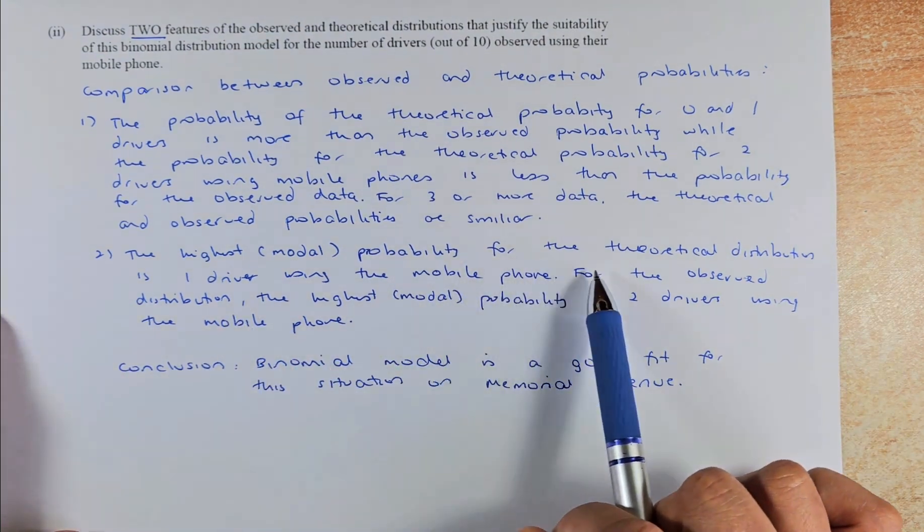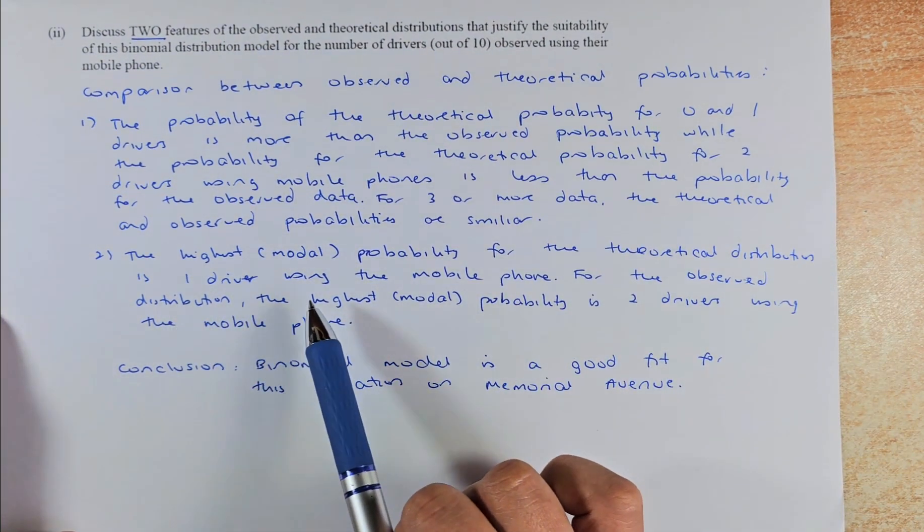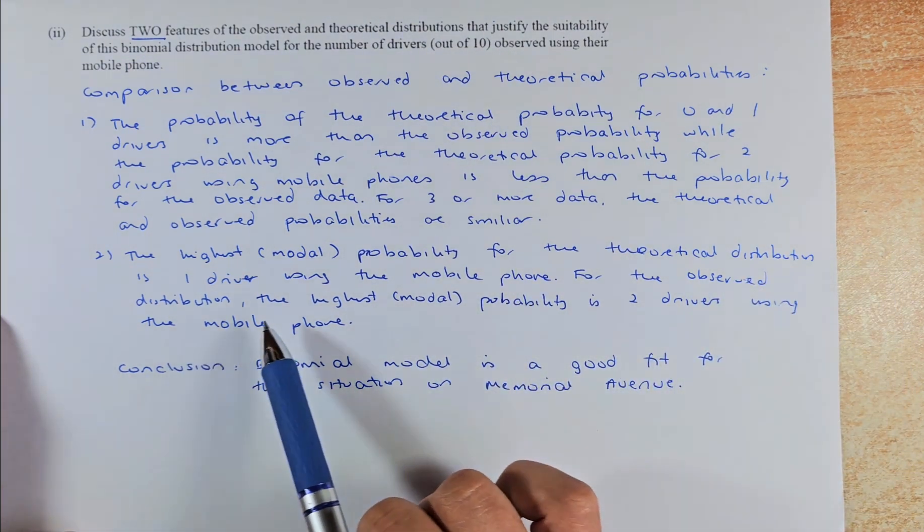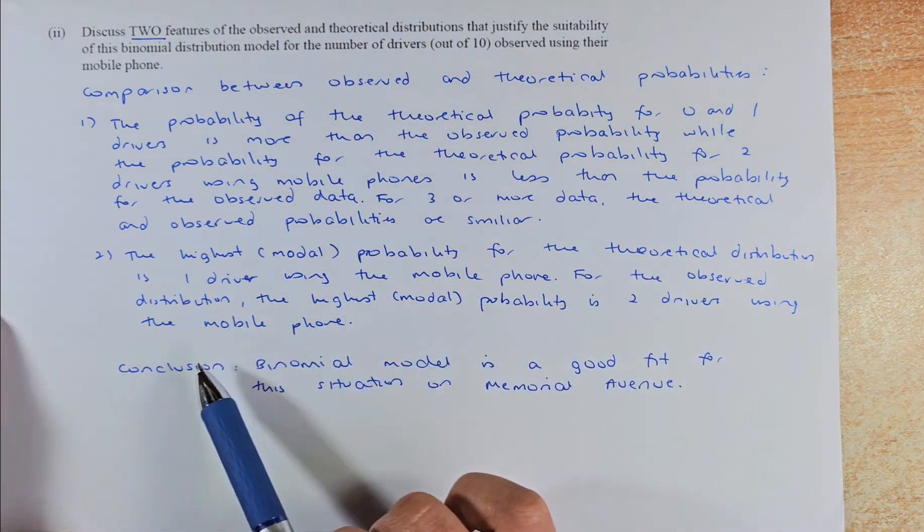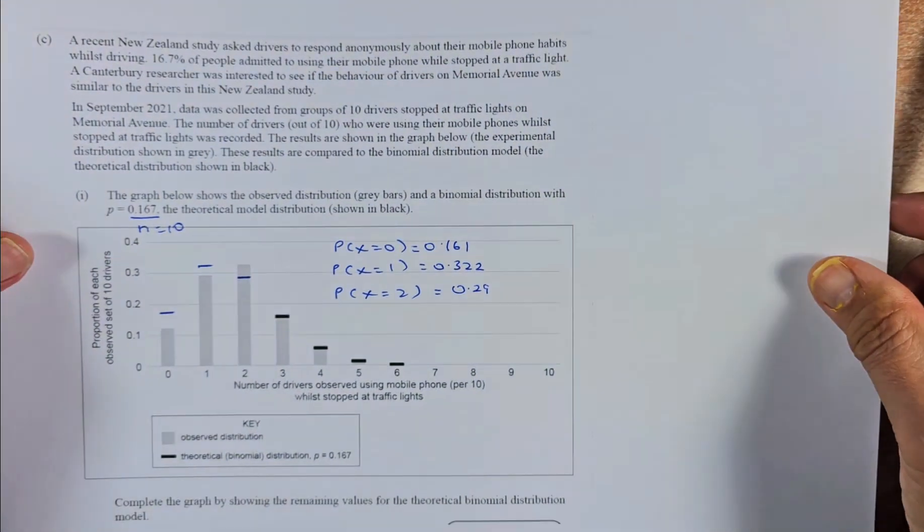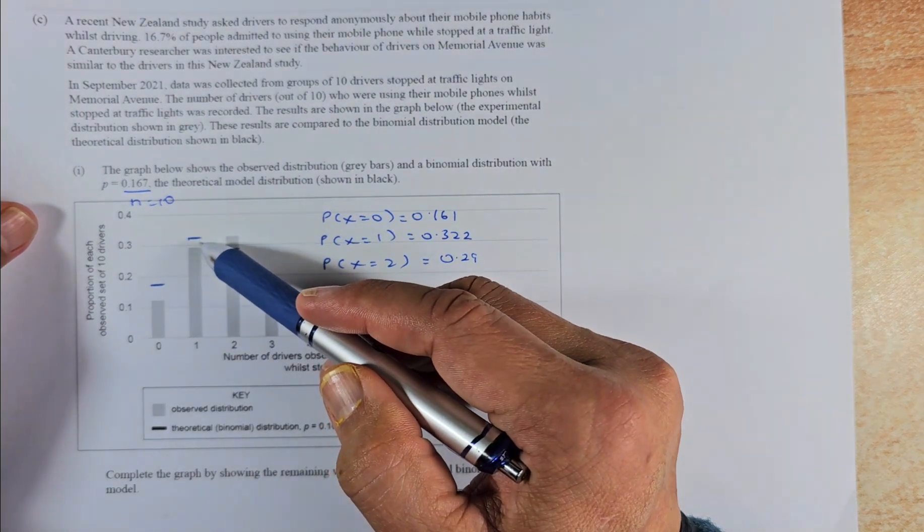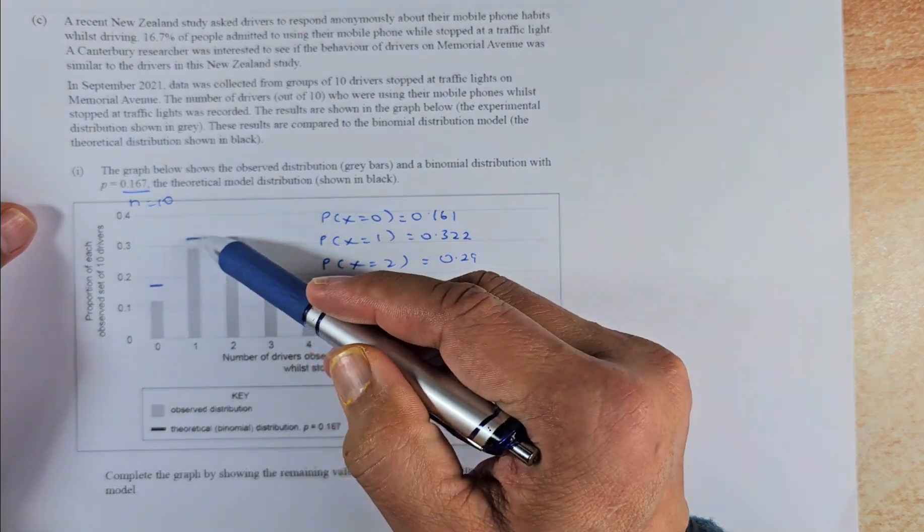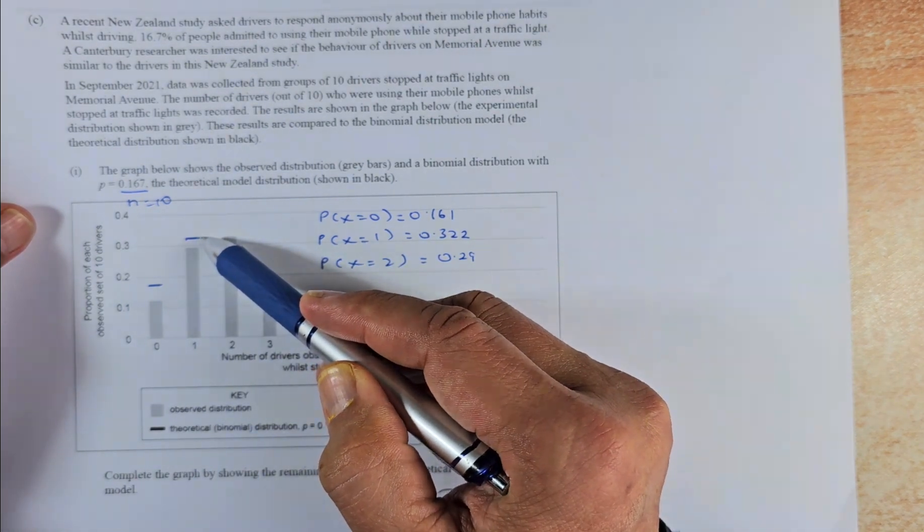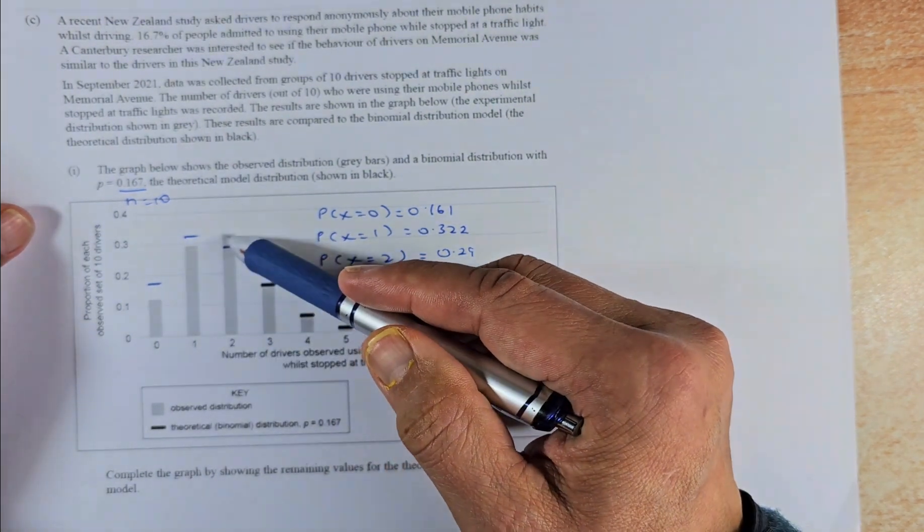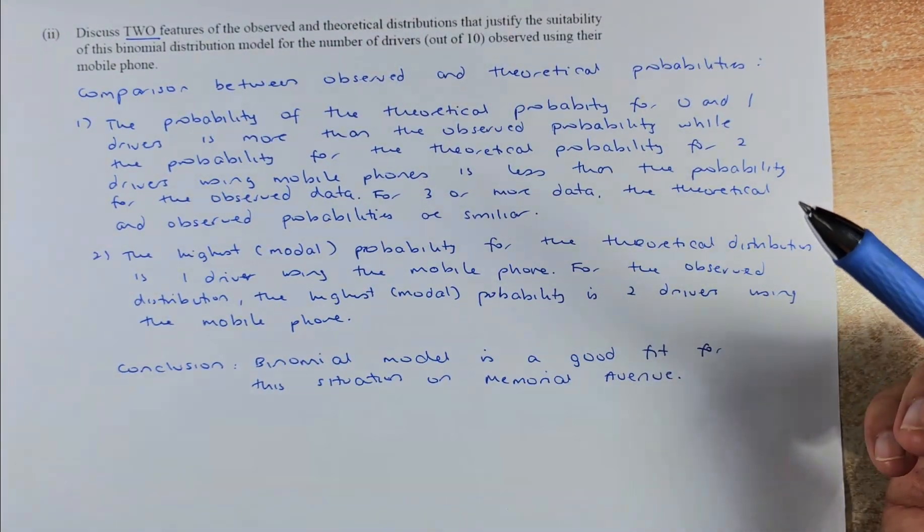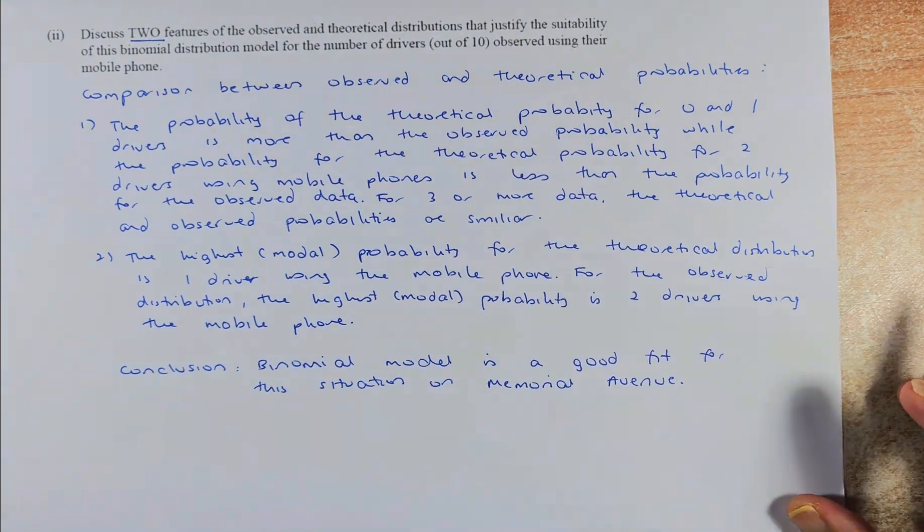The second point: The highest point for the theoretical probability is one driver using the mobile phone while driving on Memorial Avenue. For the observed, the highest probability is two drivers using the mobile phone. So again, we're going to bring back the data. So the highest point for the theoretical is this point here. Among all this point, the highest is here. So it's called the modal probability. For the observed, the gray value, the highest is at two drivers.